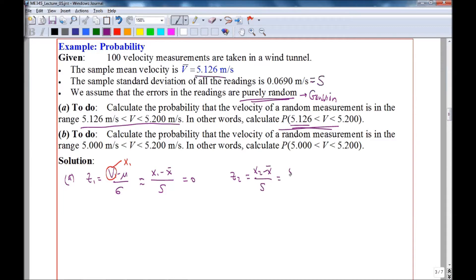And that's equal to 5.200, the second value, minus the mean, 5.126, over standard deviation, 0.0690. And this gives us 1.072.